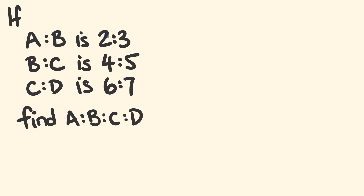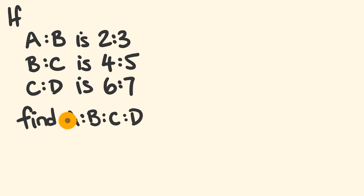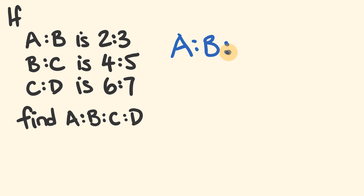For our final trick, this is one where we're going to be comparing three ratios. We have: if a is to b equals 2 is to 3, and b is to c is 4 is to 5, and c is to d is 6 is to 7, find a is to b is to c is to d. I'm going to show you how to do this really simply, starting by putting the values a, b, c and d up here.